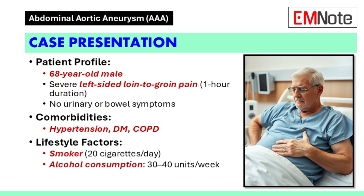Case presentation. A 68-year-old male presented to the emergency department with severe left-sided loin-to-groin pain lasting one hour. The patient reported no urinary or bowel symptoms, but had significant medical history including hypertension, diabetes mellitus, and chronic obstructive pulmonary disease. He smoked 20 cigarettes per day and consumed 30 to 40 units of alcohol weekly.